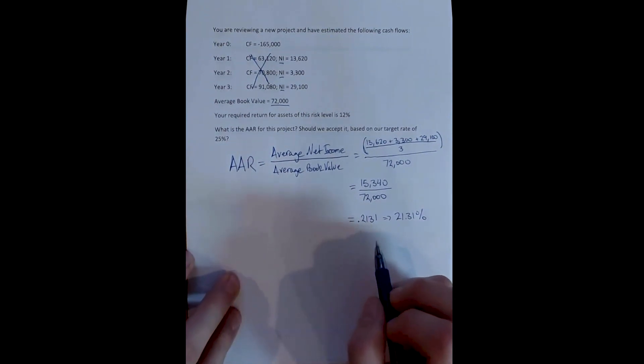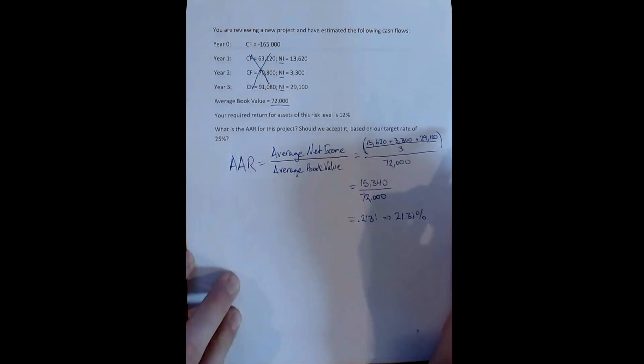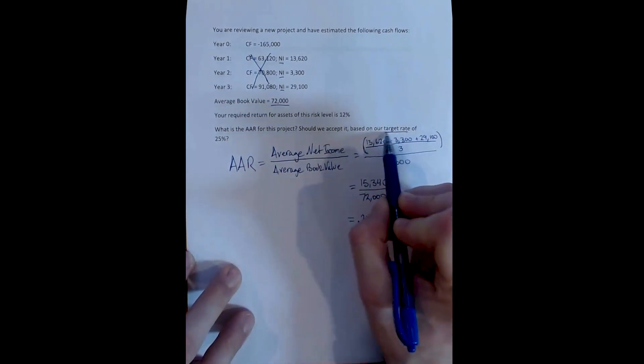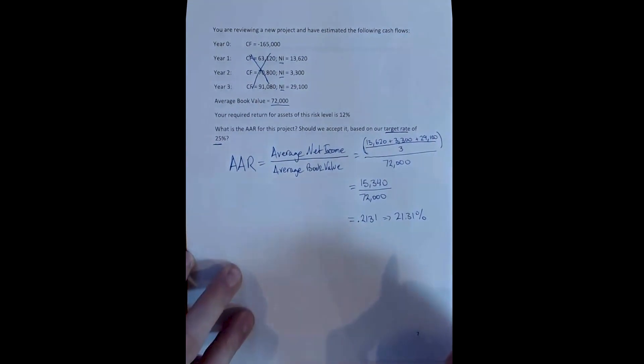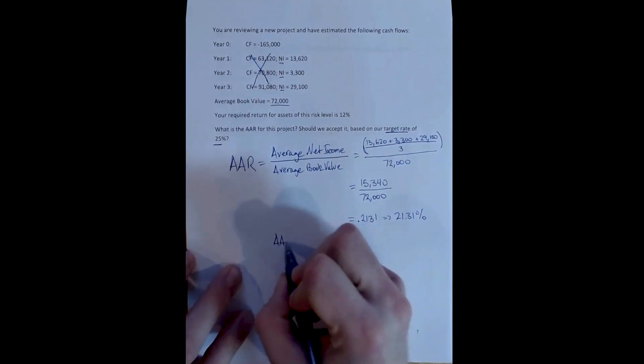And the Average Accounting Return rule says we accept the project if it provides an average accounting return that is greater than our target rate. And here we've chosen our target rate to be 25%.